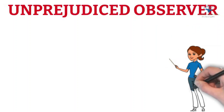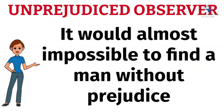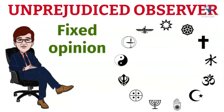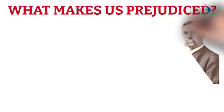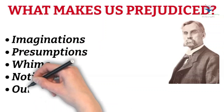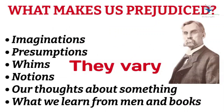Now the question comes: what does it mean by an unprejudiced observer? An unprejudiced observer refers to one who is devoid of prejudice. But by nature, everyone is prejudiced, so it would be almost impossible to find a man without prejudice. Man has fixed opinions regarding politics, religion, and also in ideas of medicine. Prejudice does not let one use his reason. According to Dr. Kent, our imaginations, presumptions, whims, notions, our thoughts about something, or what we learn from men and books makes us prejudiced because they vary.